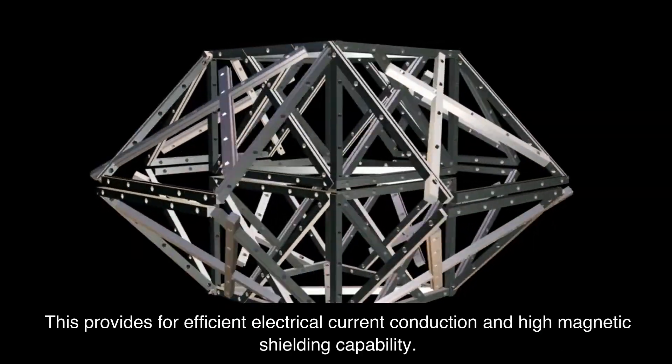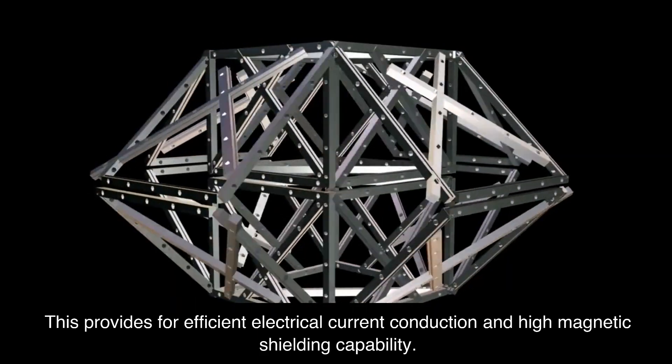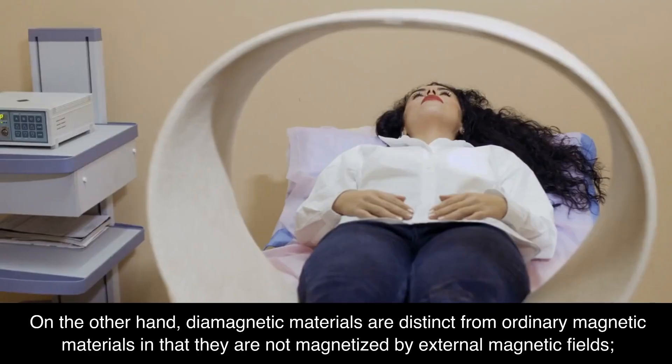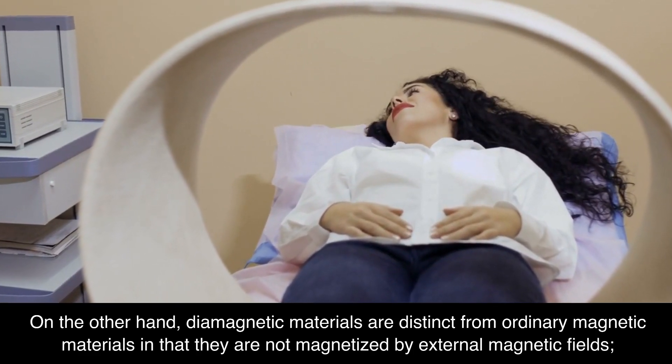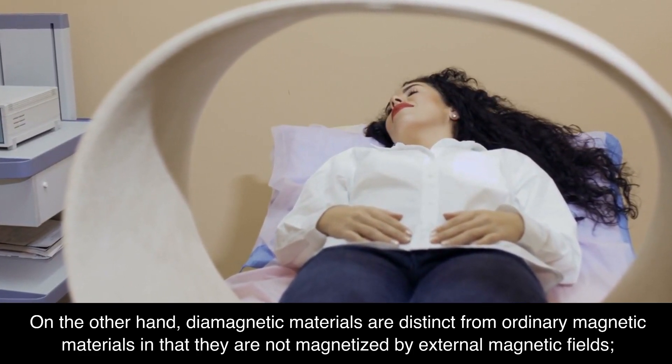This provides for efficient electrical current conduction and high magnetic shielding capability. On the other hand, diamagnetic materials are distinct from ordinary magnetic materials in that they are not magnetized by external magnetic fields.